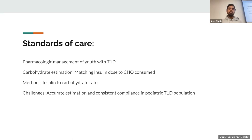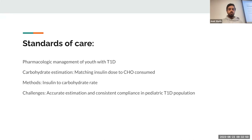These are the standards of care for managing it. One is pharmacological management of youth with type 1 diabetes — matching insulin doses to carbohydrate consumed. The method is the insulin-to-carbohydrate ratio. The challenges are accurate estimation and consistent compliance in the pediatric type 1 diabetes population.